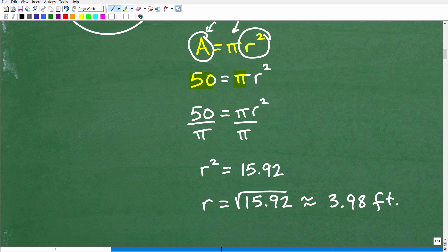Let's solve for r squared first. So what I need to do is divide both sides of the equation by pi. So I'm going to end up with 50 divided by pi is going to be equal to r squared. Because pi divided by pi is one or one r squared or r squared is 50 divided by pi.